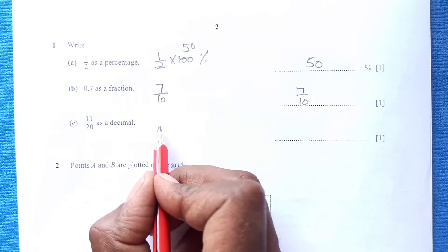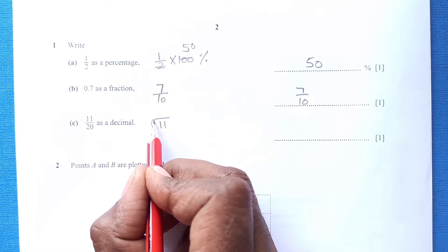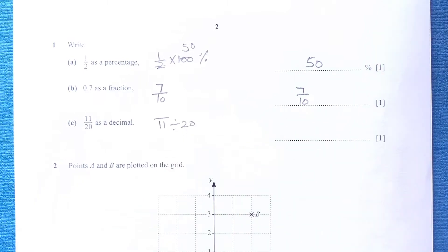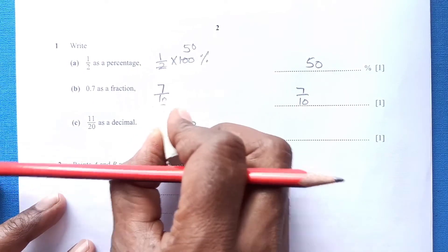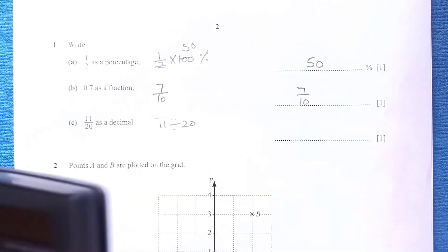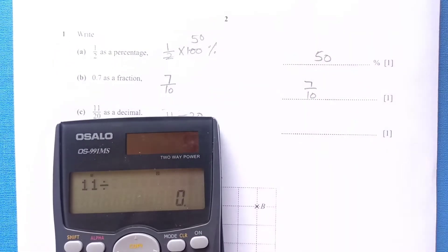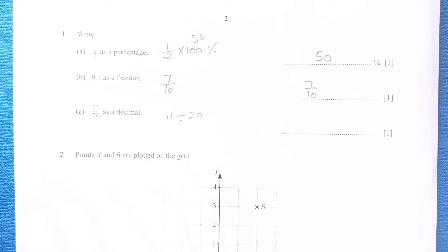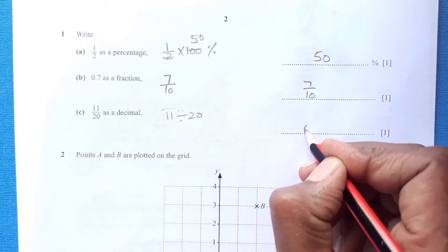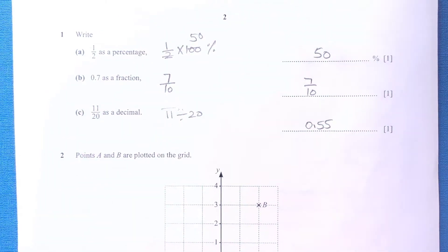11 over 20 as a decimal. 11 divided by 20. We can just divide 11 by 20. So it is 0.55.